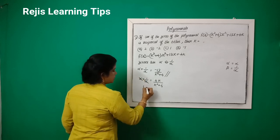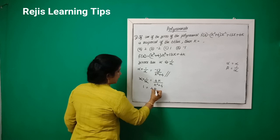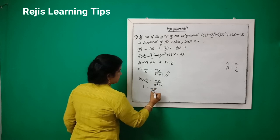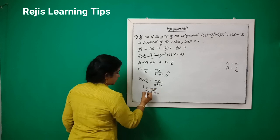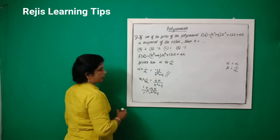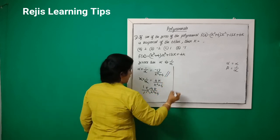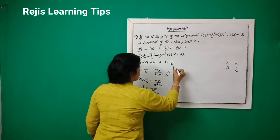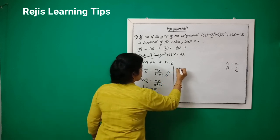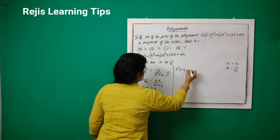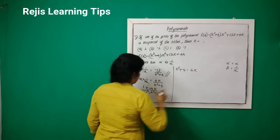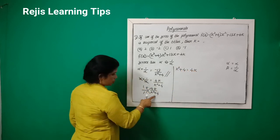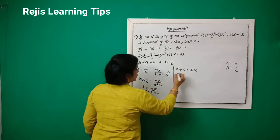Alpha cancels with 1/alpha, so 1 = 4k divided by (k² + 4). Cross-multiplying gives k² + 4 = 4k.